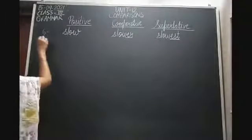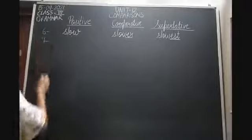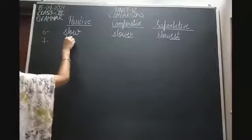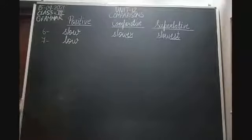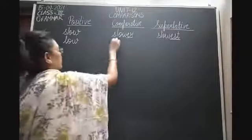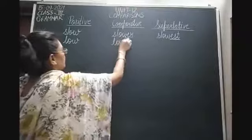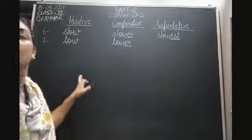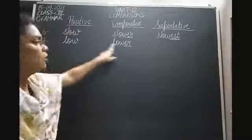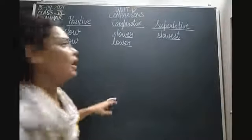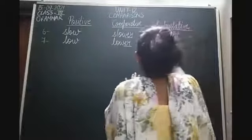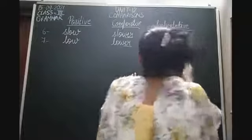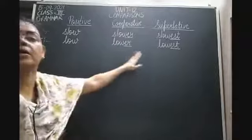The seventh positive degree is low. How will we form the comparative degree? By adding ER at the end, so it will be lower. And the superlative degree — adding EST at the end — will be lowest. So: low, lower, lowest.